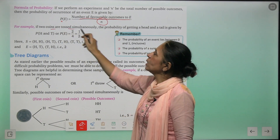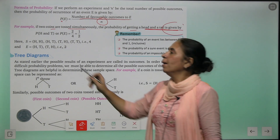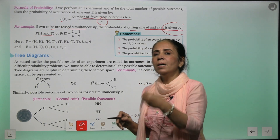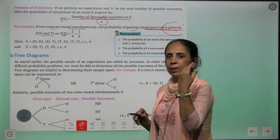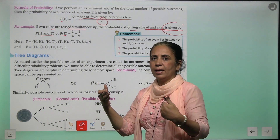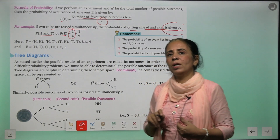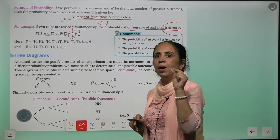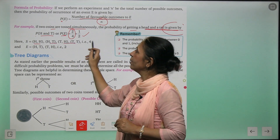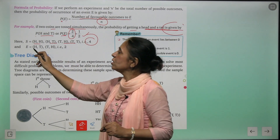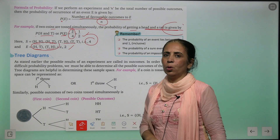For example, suppose two coins are tossed simultaneously. What is the probability of getting a head and a tail? Aap do coins ko toss kar rahe ho — ek head aayega, ek tail aayega. Do baar aisi situation aayegi: first head, second tail — and dusri possibility: first tail, second head. So we say two out of total four outcomes. Probability = two upon four, simplified to one upon two.